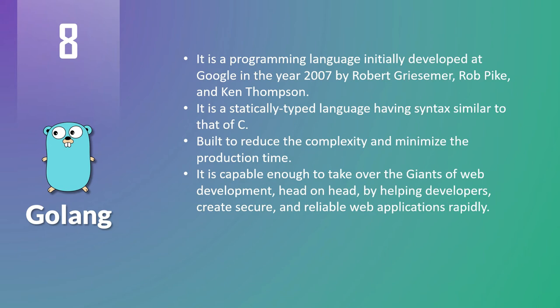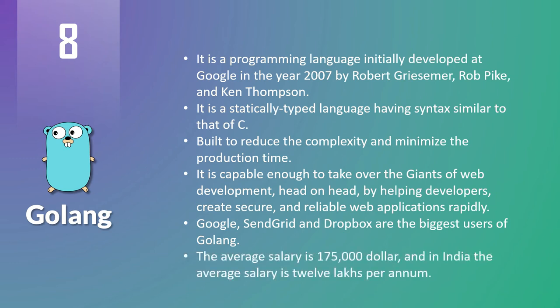Go is also capable of developing microservices and APIs to interact with front-end applications. Major tech giants like Google, Sendgrid, and Dropbox are the biggest users of Go. The average salary of Go developers is $175,000 US dollars per annum, and in India the average salary of Go developers is 12 lakhs per annum.